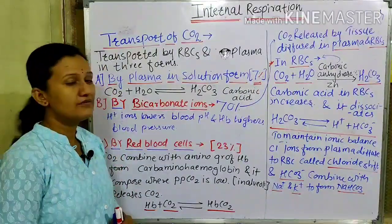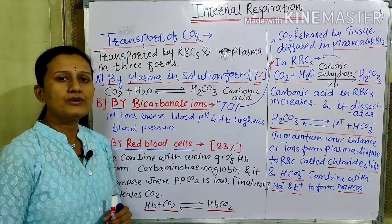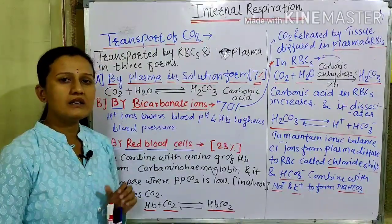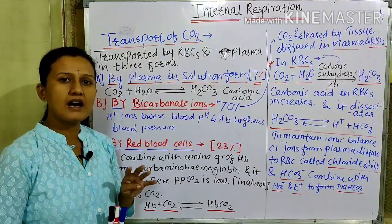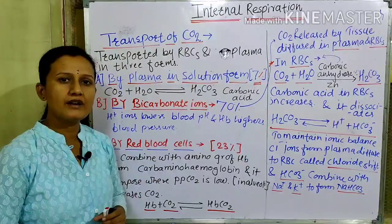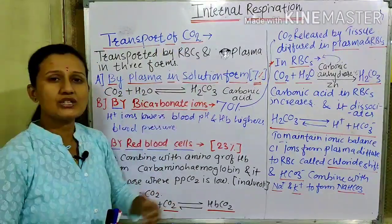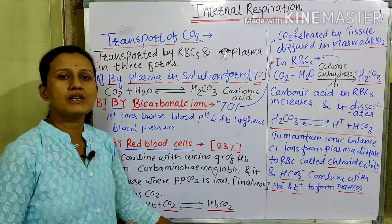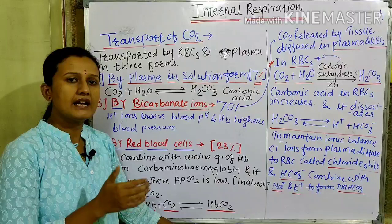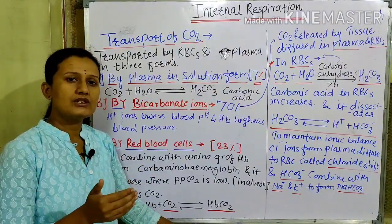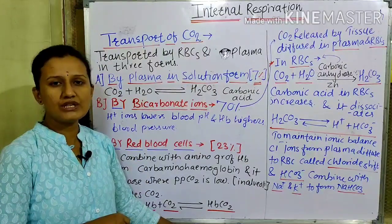Hello students. In the last session we have seen the internal respiration and the transport of O2. We learned that transport of O2 is done by the RBCs and plasma with the help of hemoglobin. Hemoglobin is a type of protein present in the RBCs. The oxygen dissociation curve shows how oxygen binds. Internal respiration is carried out from the alveolar to the tissue level — from the alveolar sacs, the capillary network carries O2 into blood capillaries, which then carry blood to the heart and from the heart to each and every tissue and cell of the body.